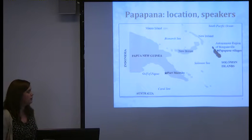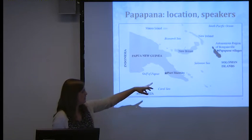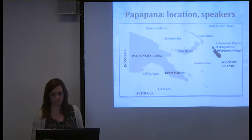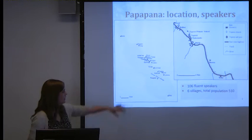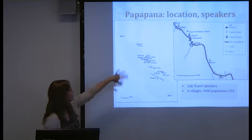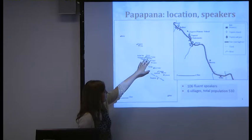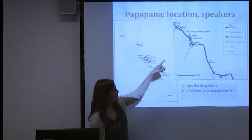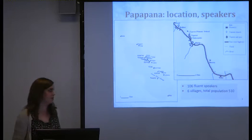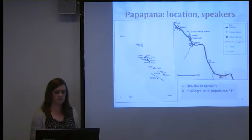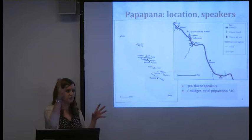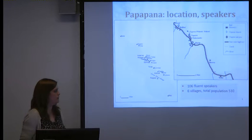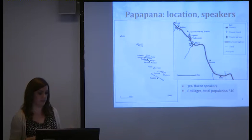Papua Pana is spoken on Bougainville Island, which is in Papua New Guinea. It's spoken on the north-east coast. Here's Bougainville Island — if we zoom in to around Koi Koi, you can see Koi Koi at the top and some other villages. There are six villages in total; some are just small clearings, and some are spread around rivers and roads. In total there's a population of about 510 people in those six villages.